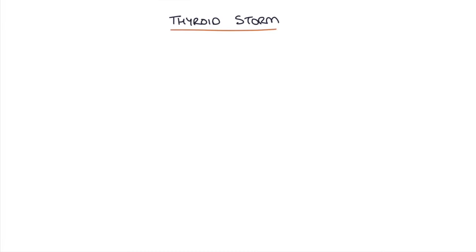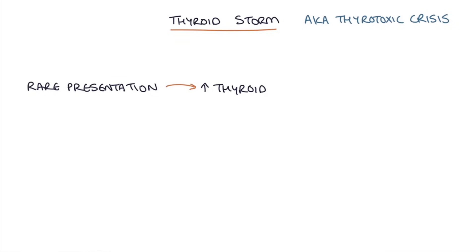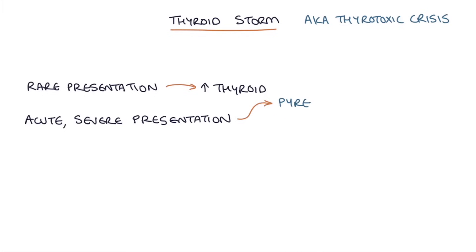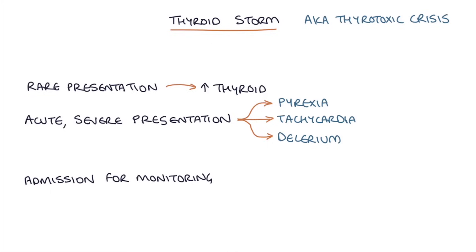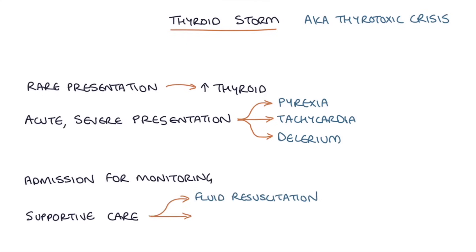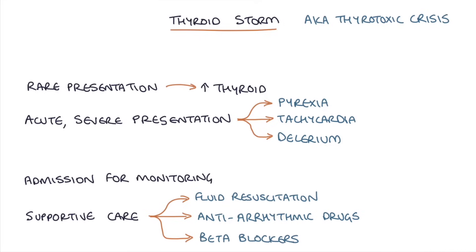Thyroid storm is a rare, severe presentation of hyperthyroidism, also known as thyrotoxic crisis. The patient presents acutely with pyrexia, tachycardia, and possibly delirium. It requires admission for monitoring and is treated similarly to other presentations of thyrotoxicosis, though patients may need additional supportive care including fluid resuscitation, anti-arrhythmic drugs if they go into AF or another arrhythmia, and beta blockers to treat symptoms.